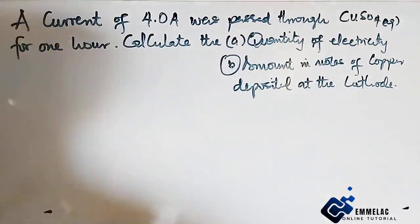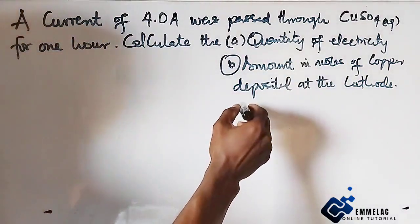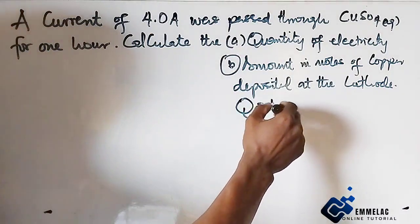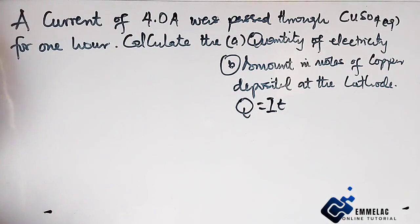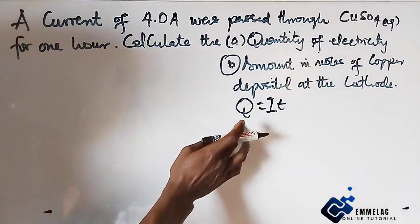First of all, for us to calculate the quantity of electricity, let's recall that Q equals the current, the product of the current and time.